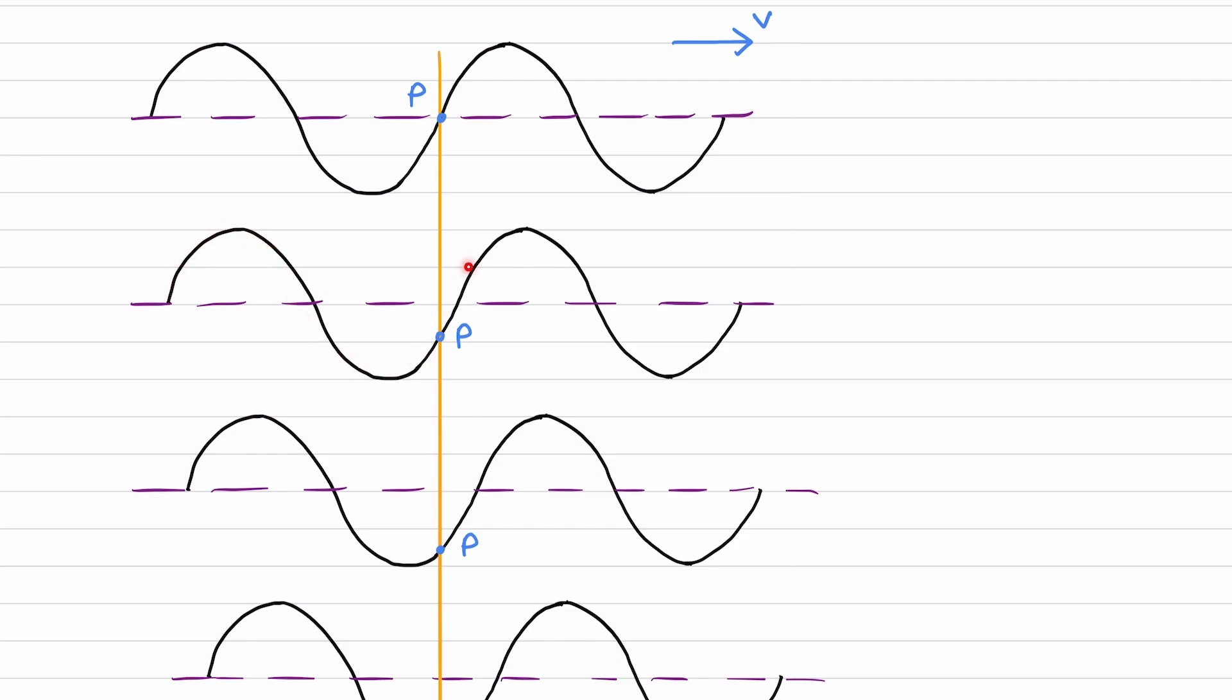As the metal wire, the wave, moves towards the right, P will stick along with it. It will also stay on this orange line here. And we see that as this trough here moves towards the right, P will drop down.